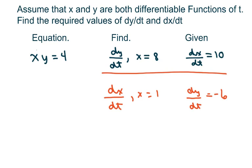Hi everyone, we're going to assume that x and y are both differentiable functions of t and we're going to find the required values. Our equation is given as x times y equals 4 and we have to find the derivative of y and the derivative of x both with respect to t, given certain information here.